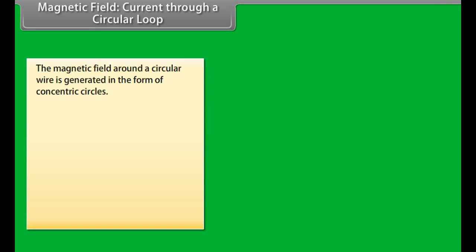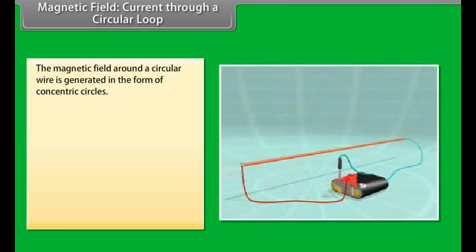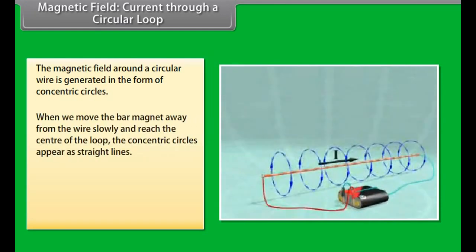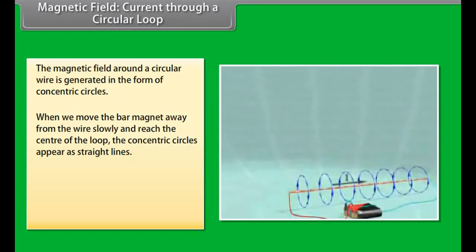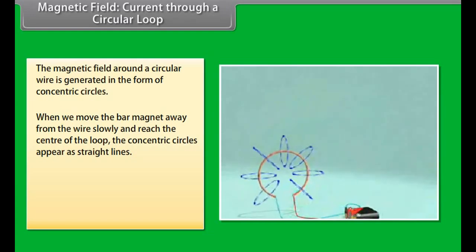Magnetic Field Current Through a Circular Loop. Let us now look at what happens when the wire through which we passed the current is placed in a circular manner. The magnetic field around it is generated in the form of concentric circles. Try moving the bar magnet away from the wire slowly. By the time we reach the center of the loop the concentric circles appear as straight lines.